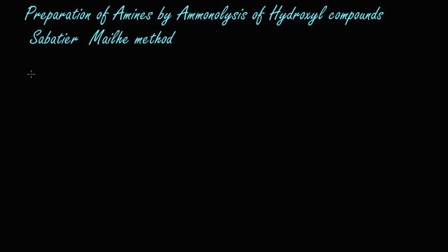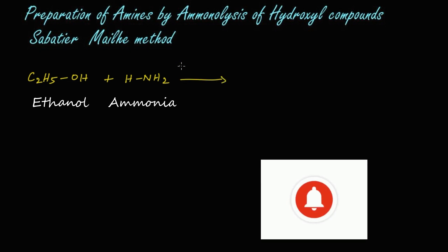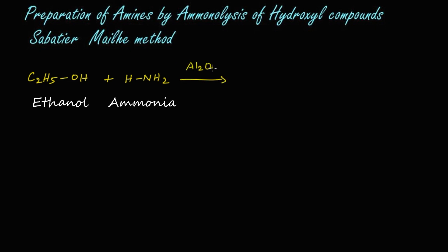Here we are going to aminolyze ethyl alcohol, that is ethanol (C₂H₅OH). We are going to react it with ammonia (H-NH₂). The reaction takes place in the presence of alumina (Al₂O₃), or W₂O₅, or silica — any of these catalysts can be used. During the reaction, dehydration takes place: the OH from the alcohol and hydrogen from ammonia leave as H₂O.